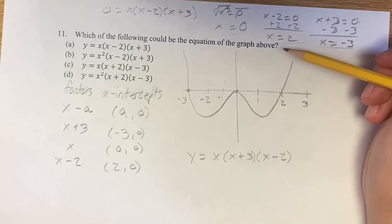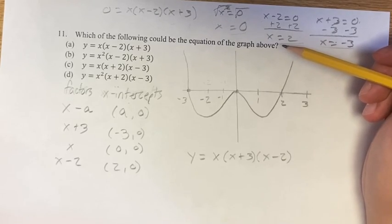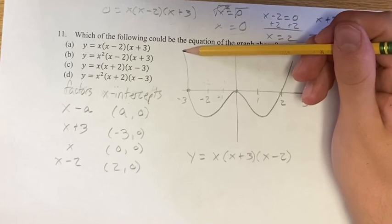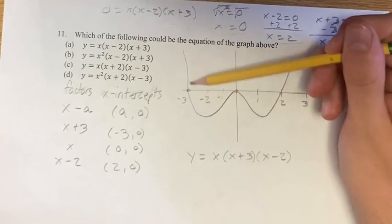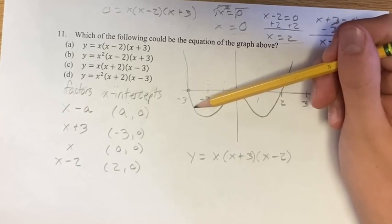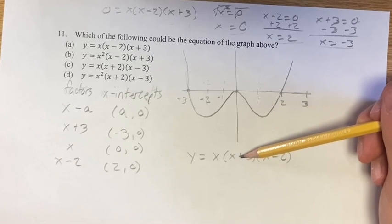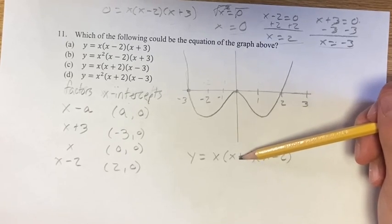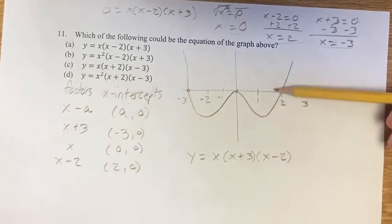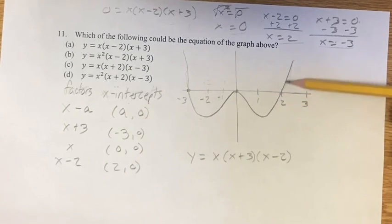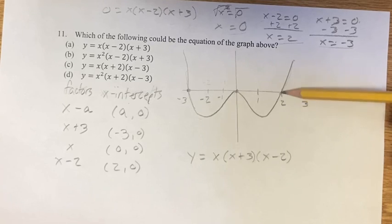We have to look at the behavior of the graph. So if we have the line or the curve goes through the x-axis like it does here, then we know the term associated with it, in this case x plus 3, has to be to an odd power. Same thing here at 2. It goes through the x-axis and keeps going. Therefore, it has to be to an odd power.